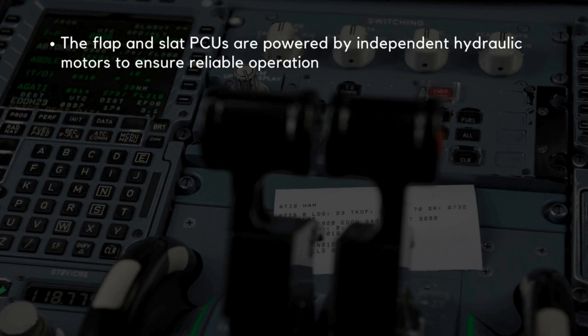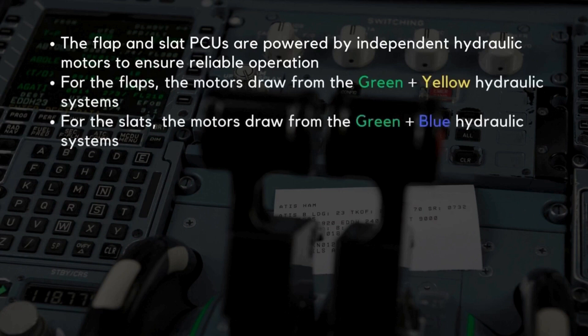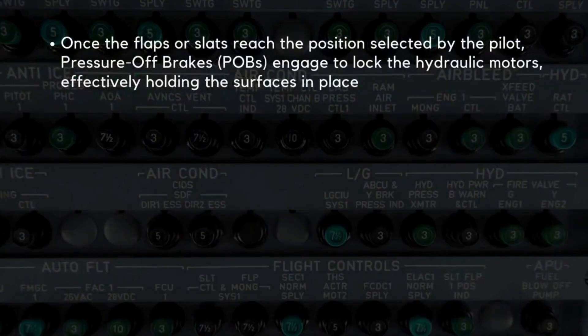The flap and slat PCUs are powered by independent hydraulic motors to ensure reliable operation. For the flaps, the motors draw from the green and yellow hydraulic systems, and for the slats, they rely on the green and blue hydraulic systems. This independence adds an additional layer of reliability, allowing for continuous operation even if one hydraulic system fails. Once the flaps or slats reach the position selected by the pilot, pressure-off brakes engage to lock the hydraulic motors, effectively holding the surfaces in place and preventing any unwanted movement that could disrupt flight performance.